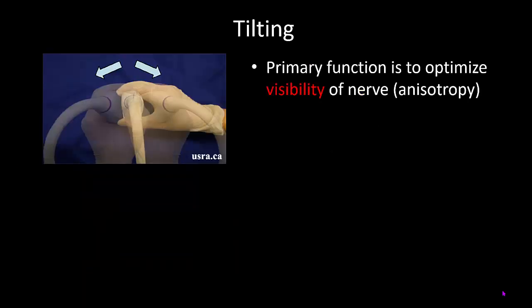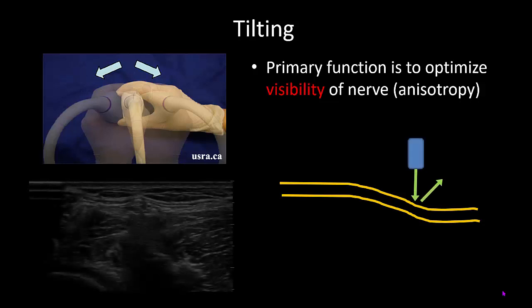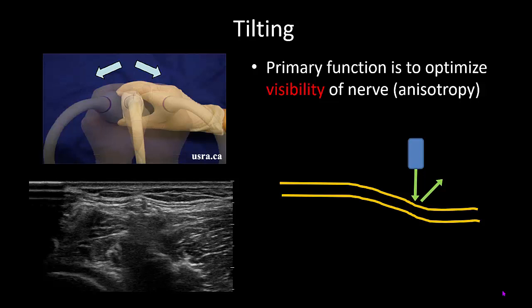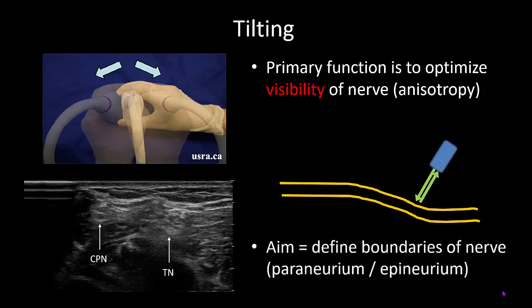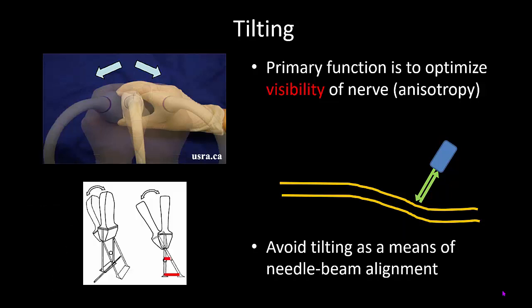The primary function of tilting is to optimize the visibility of target nerves. This is due to a phenomenon called anisotropy. Simply put, nerves do not run parallel to the skin surface, so when the ultrasound beam hits them, it may reflect away from the probe rather than towards it. The popliteal sciatic nerve is a good example of this — you can see here that the common peroneal and tibial nerves are barely visible. But by tilting the probe to orient the beam perpendicular to the nerve, we maximize the return of the echoes and thus the echogenicity of the nerves. The optimal tilt is the one where the boundaries of the nerve are best defined. Tilting should not, however, be used to try and align the beam with the needle during insertion, as it is very difficult to make small translations in beam position by tilting, and the translated distance also varies with the depth of the structures.